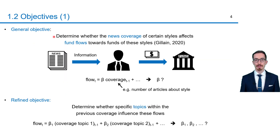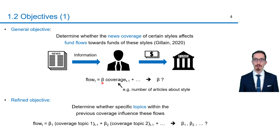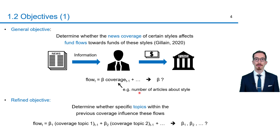Considering the recent popularity of smart beta ETFs, one may wonder whether the news coverage of certain styles affects the allocation decision of institutional investors and thereby cash flows towards corresponding funds. This is the research question of Cédric Gilin's PhD thesis that provided the framework for this master thesis. Mathematically, this objective can be restated as the search for the regression coefficient beta that relates fund flows at time t to the news coverage of a certain style at t minus one. This coverage can for instance be measured by the number of published articles related to this style.